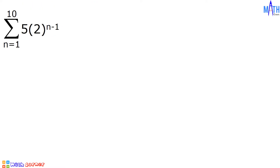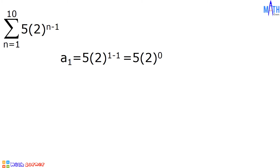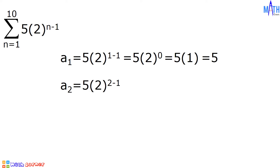To determine the first term, we will substitute 1 to n in the expression 5 times 2 raised to n minus 1. If n is equal to 1, a sub 1 is equal to 5 times 2 raised to 1 minus 1. 1 minus 1 is equal to 0, and we have 5 times 2 raised to 0. 2 raised to 0 is equal to 1, so 5 times 1 is equal to 5. The first term is equal to 5. If n is equal to 2, a sub 2 is equal to 5 times 2 raised to 2 minus 1. 2 minus 1 is equal to 1, and we have 5 times 2 raised to 1. 2 raised to 1 is equal to 2, so 5 times 2 is equal to 10.